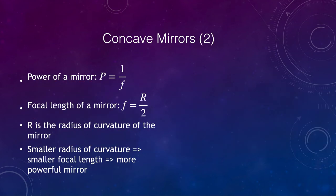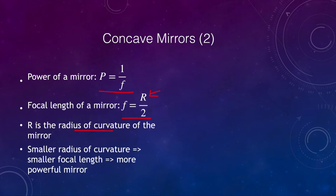Let's remind ourselves of some key formulas. The power of a mirror is one over the focal length, and the focal length of a mirror is given by the radius of curvature divided by two. A small radius of curvature gives a smaller focal length and therefore a more powerful mirror. When the focal length is small, the power becomes much larger, so a smaller radius of curvature gives a smaller focal length and a more powerful mirror.